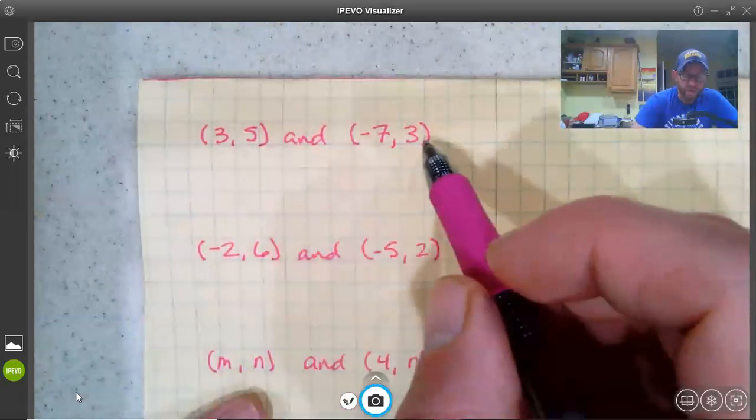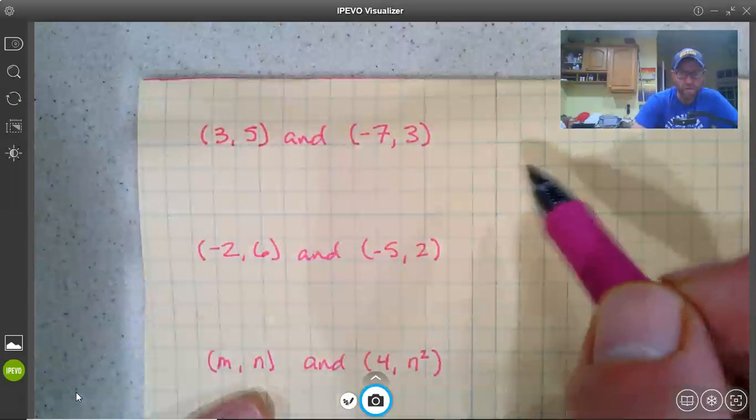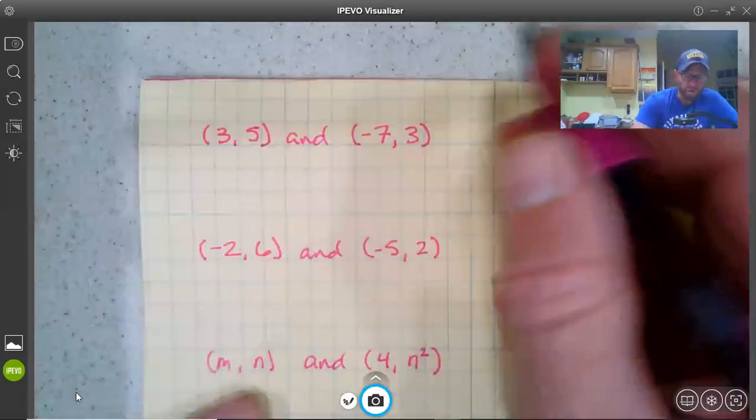So we just have to figure out what number is halfway between 3 and negative 7, and what number is halfway between 5 and 3. Between 5 and 3, it's easier - it's 4. But what's between negative 7 and 3? Well, fortunately, there's a formula for us.